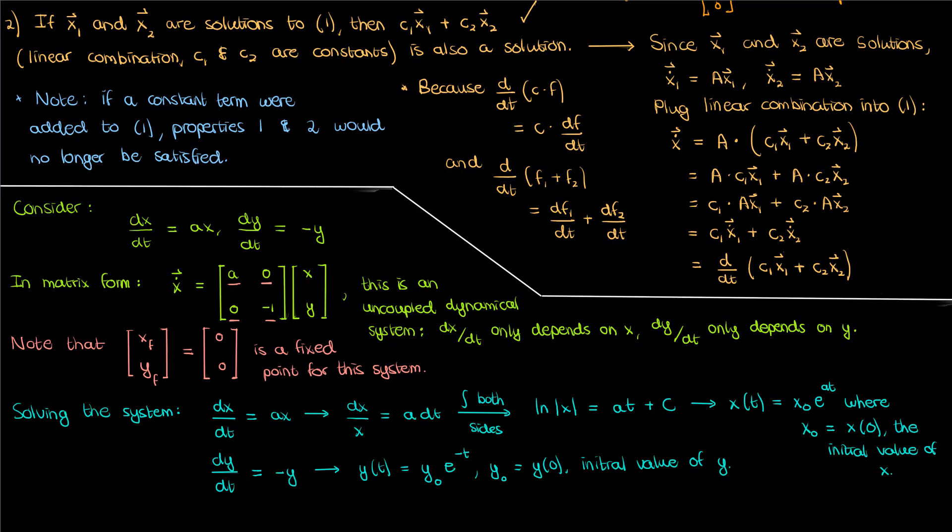So now that I've solved my uncoupled linear system, I'm in a position to analyze the solutions for different starting values of x and y, different initial conditions. I didn't need to solve the system to analyze the solutions, but solving it will help put things into context when we look at the phase portraits of the system for different values of a.